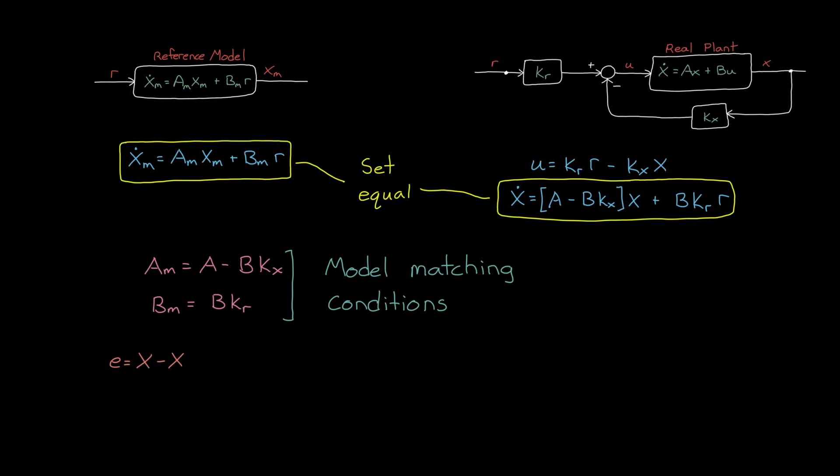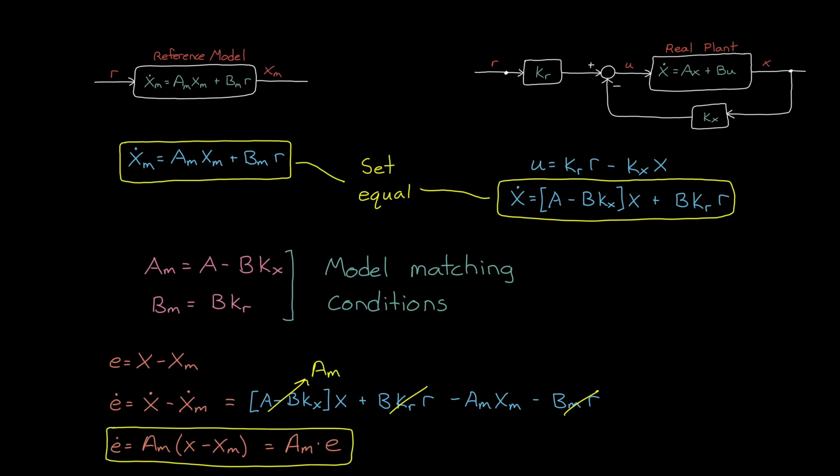So we have E equals X minus XM. And if we take the derivative of that, we get E dot equals X dot minus XM dot. And after we substitute in the two state equations, we get this. If we now pick KX and KR that make the model matching conditions true, then these two terms will cancel out, and this bit becomes AM.